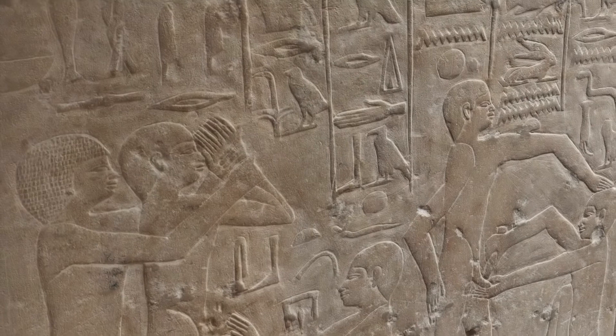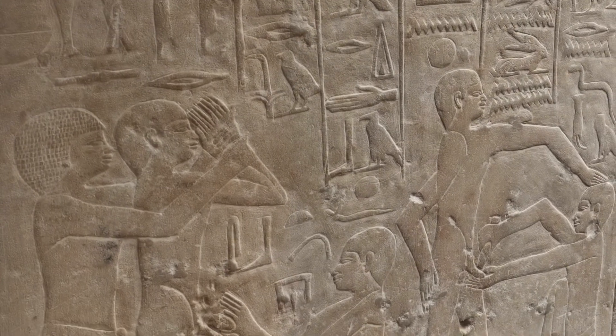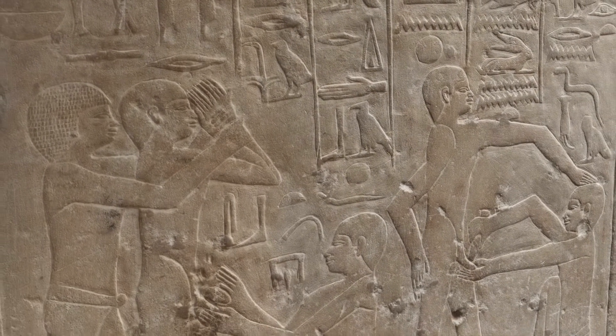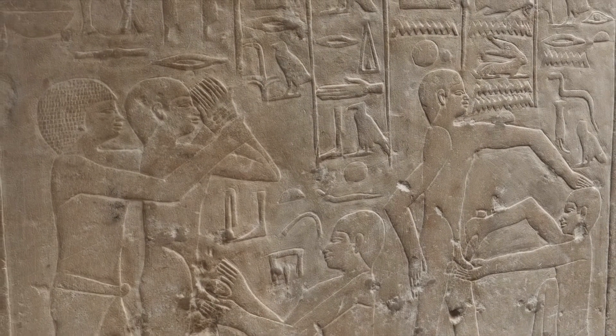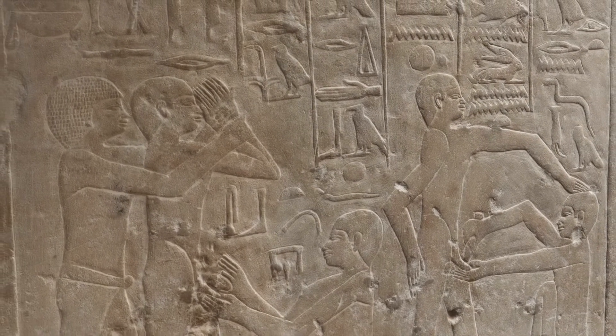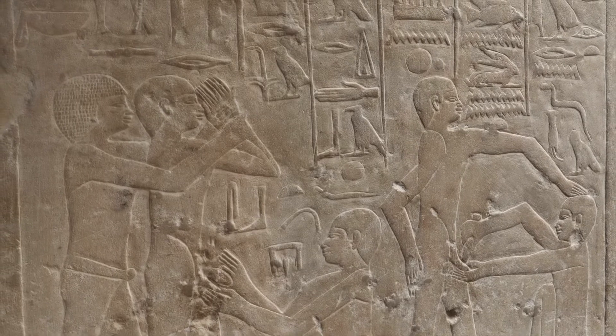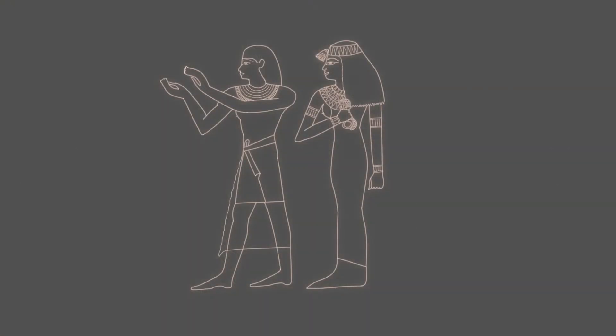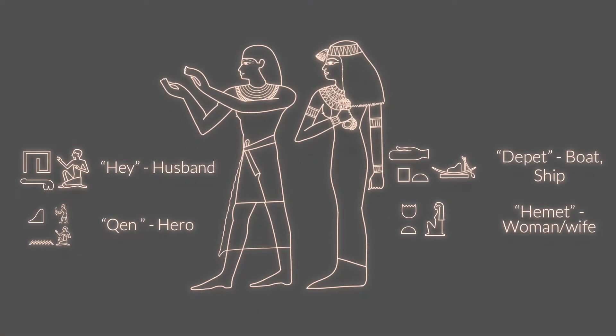Ancient Egyptian grammar, very basic. Let's start at the beginning. Let's start with the nouns. Nouns can be either male or female.